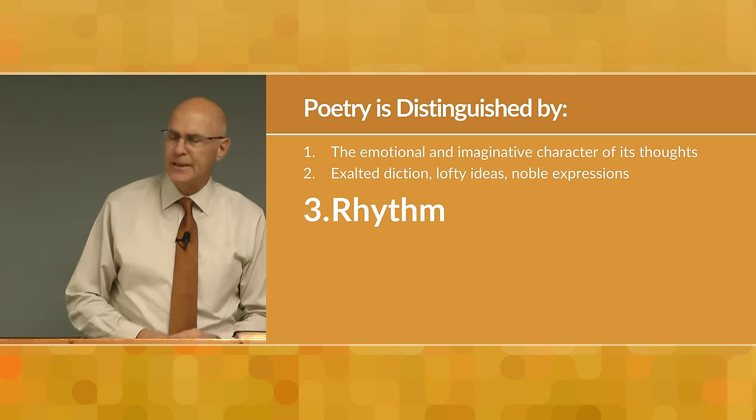Another type is antithetic parallelism, where the second line is a contrast to the first — not similar, but contrasted. In Psalm 30: 'For His anger is but for a moment, His favor for a lifetime.' Contrast — His anger versus His favor. 'Weeping may last for the night, but a shout of joy comes in the morning.' Weeping at night, joy in the morning. That's antithetic — a different contrasting concept presented in the next line.